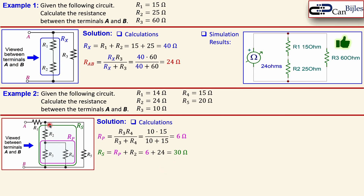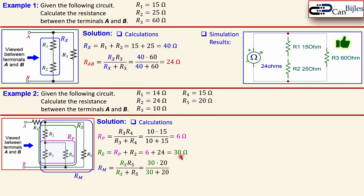The complete branch Rs spans from one node to the other and is in parallel with R5, so we create a new simplification Rm, which is the parallel combination of Rs and R5. Using the two-resistor parallel formula with 30 and 20 gives exactly Rm = 12 ohms.